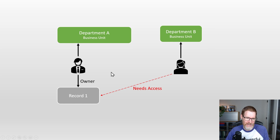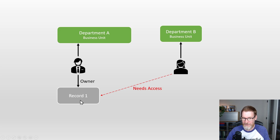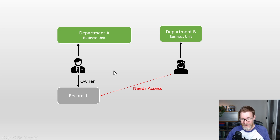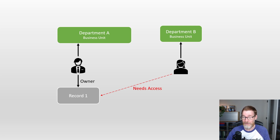A user can only be assigned to a single business unit. So if you imagine a scenario where you've got somebody in Department A and somebody in Department B, if that person in Department B needs access to any records owned by the user in Department A, you might think you'd just add that user to Department A's business unit. But the fundamental challenge is that users can only be a member of a single business unit, and that single fact has been an uncomfortable truth over the years.